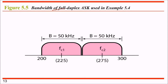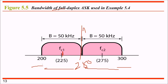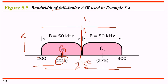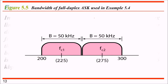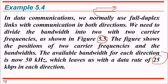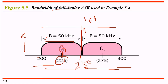In full duplex, if the band is 200 to 300 kHz, we split at 250 kHz: one direction uses 250 to 300 kHz with carrier frequency 275 kHz, the other uses 200 to 250 kHz with carrier frequency 225 kHz. Each direction has a bandwidth of 50 kHz. Since the previous answer for bitrate was 50 kbps over 100 kHz, with 50 kHz per direction the data rate becomes 25 kbps. This is the bandwidth for full duplex ASK.